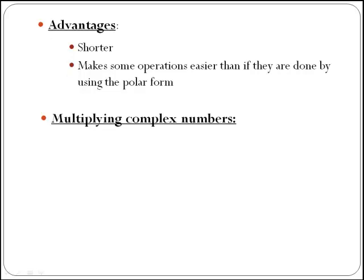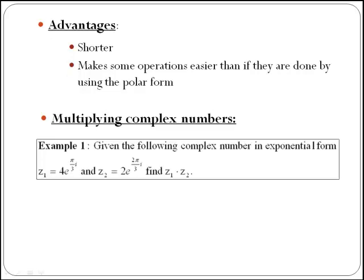Let's think about multiplication of complex numbers once we know modulus and angle rather than working in Cartesian coordinates. Have a look at the following example. Given the following complex numbers in exponential form: z1 equals 4e to the power of πi/3, and z2 equals 2e to the power of 2πi/3, find z1 times z2.